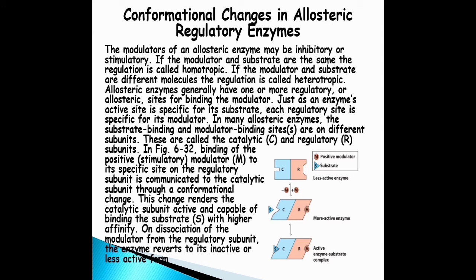Allosteric enzymes generally have one or more regulatory or allosteric sites for binding the modulator. Just as an enzyme's active site is specific for its substrate, each regulatory site is specific for its modulator. In many allosteric enzymes, the substrate binding and modulator binding sites are on different subunits.